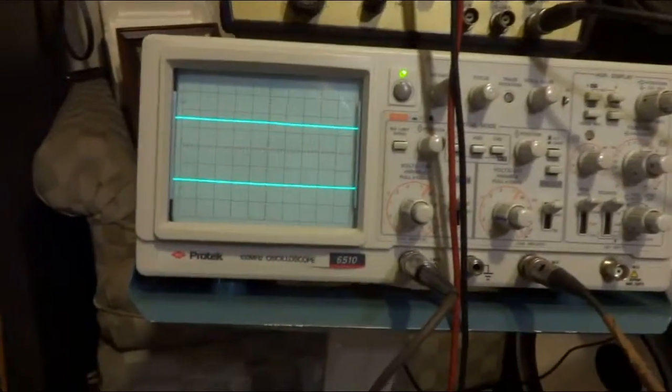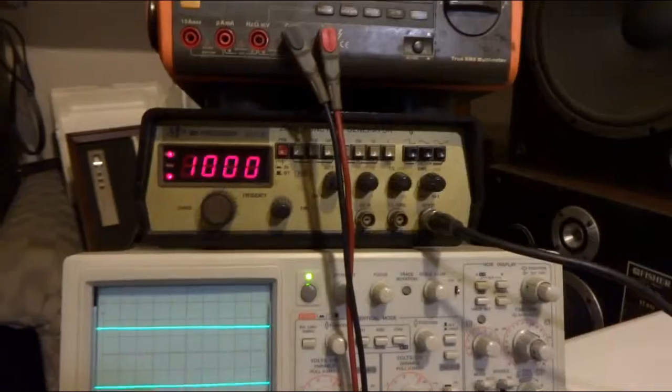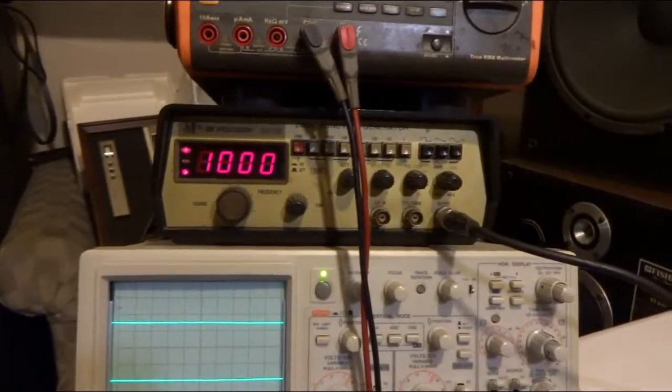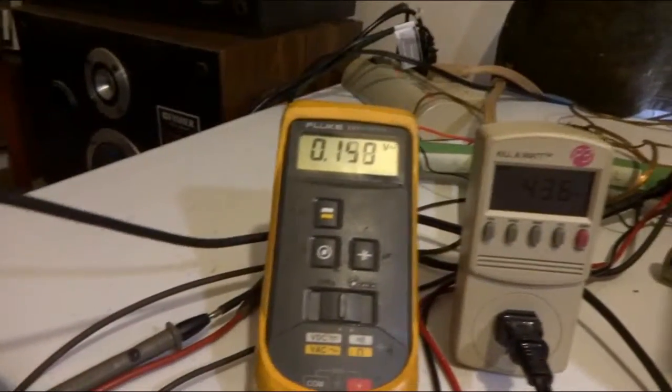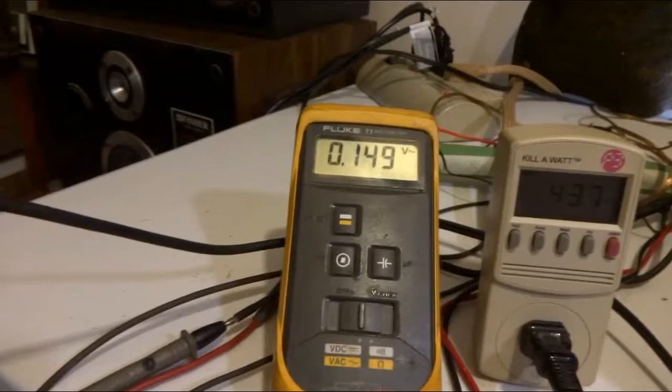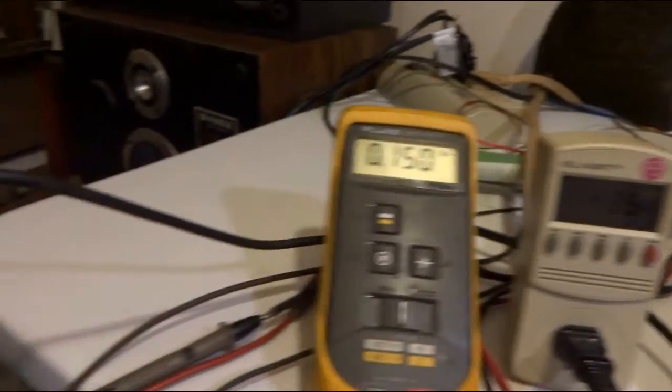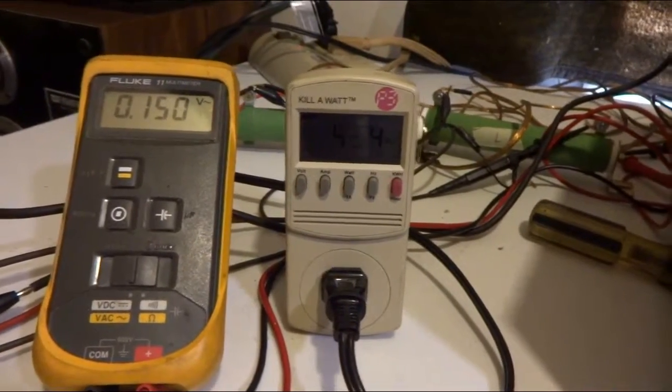I have an oscilloscope, function generator set at 1kHz, AC voltmeter. I have another AC voltmeter here hooked up to my function generator reading the voltage output of that, and a kilowatt meter just to show how much power this unit is consuming.